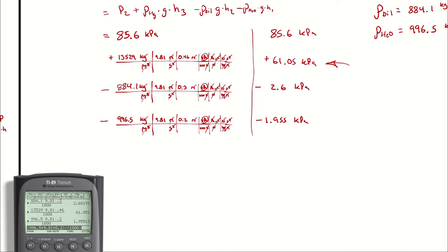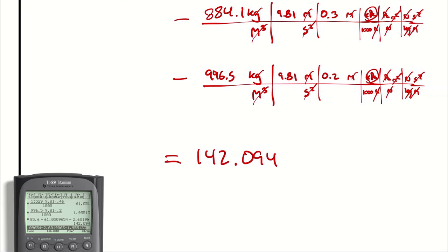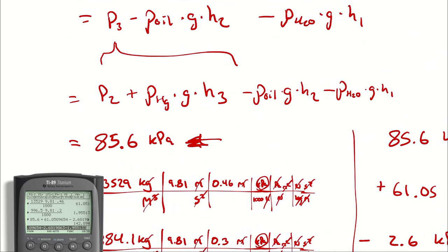Anyway, with this, we have enough information to actually compute an answer, so I will say 85.6 plus 61.051 minus 2.6019 minus 1.955, and we get 142. And once again, I will pose the question, is this a gauge pressure or an absolute pressure? It is an absolute pressure because we are adding in atmospheric pressure. If you had treated the problem as though the atmospheric pressure was zero, what you're doing is determining the pressure effects relative to atmosphere, which would be a gauge pressure. That would be just considering these three quantities instead of all four.